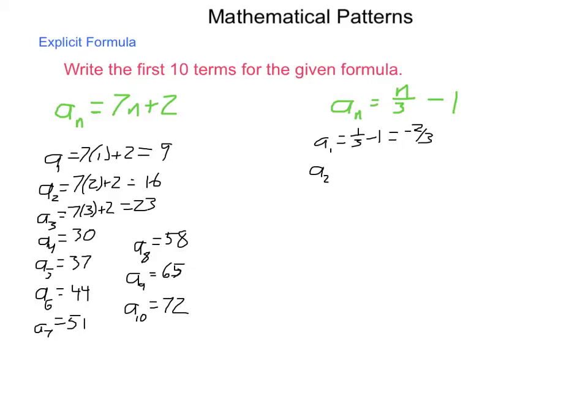a sub 2 is 2 divided by 3 minus 1, which is negative 1 third. a sub 3 is 3 divided by 3 minus 1, which is 0. a sub 4 will continue this pattern.